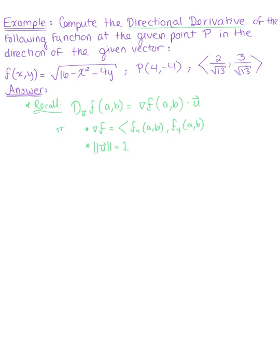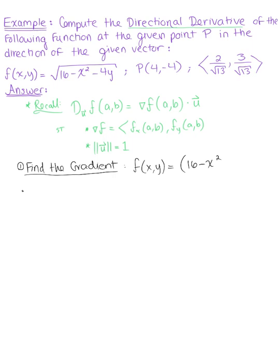We're given the function f(x, y) = √(16 - x² - 4y), and the first thing we want to do is find the gradient, so we need our partial derivatives. We'll start by rewriting our function: f(x, y) = (16 - x² - 4y)^(1/2), rewriting the square root in its exponential form.